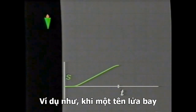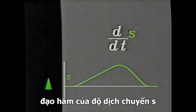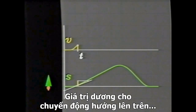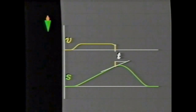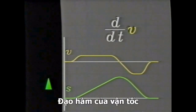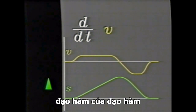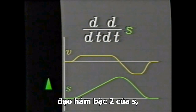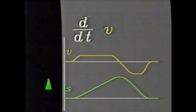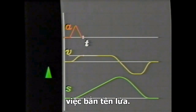The value of differential calculus can be seen in the variety of its applications. For example, when a rocket moves with displacement s at time t, the derivative of the displacement is the velocity — positive for upward motion and negative for downward motion. The derivative of the velocity is the acceleration, which is the same as taking the derivative of a derivative — that is, the second derivative of s. The acceleration is caused by the firing of the rocket.